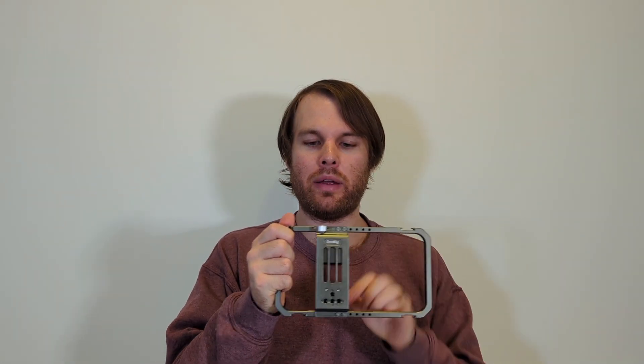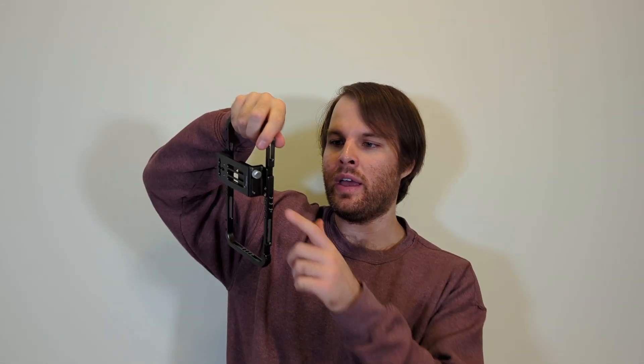In addition to the cold shoe we also have the standard quarter-20 mounting positions here and we have three on either side of the SmallRig along with four on the back of the actual mounting plate. This is a good place to put an external battery. You can mount the SmallRig pretty much anywhere you want on your tripod.